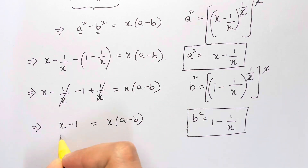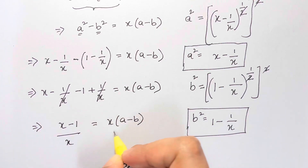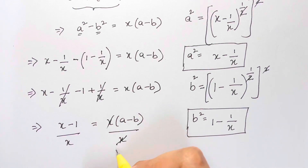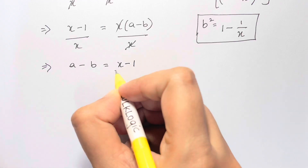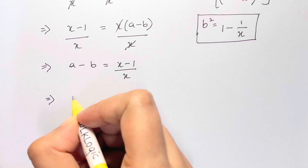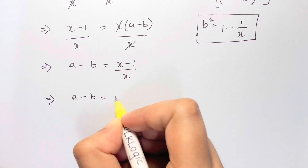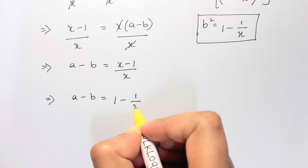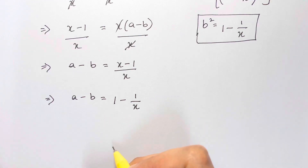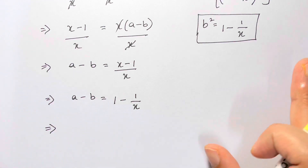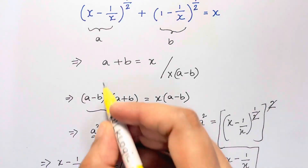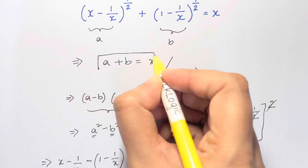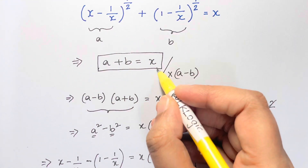Now let's divide both sides by x. The x's cancel out, so we get a minus b equals (x minus 1) over x, which we can write as a minus b equals 1 minus 1 over x. And we already know that a plus b equals x.